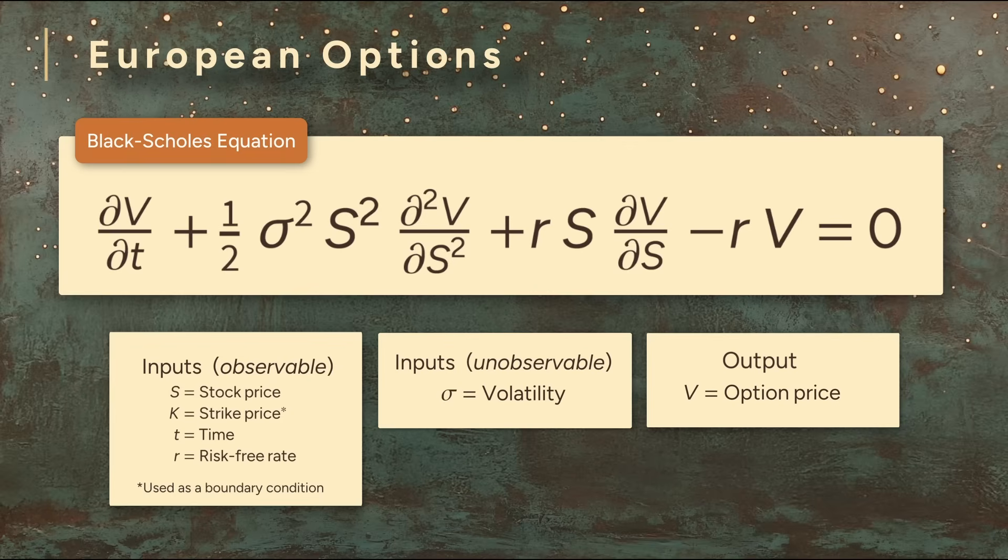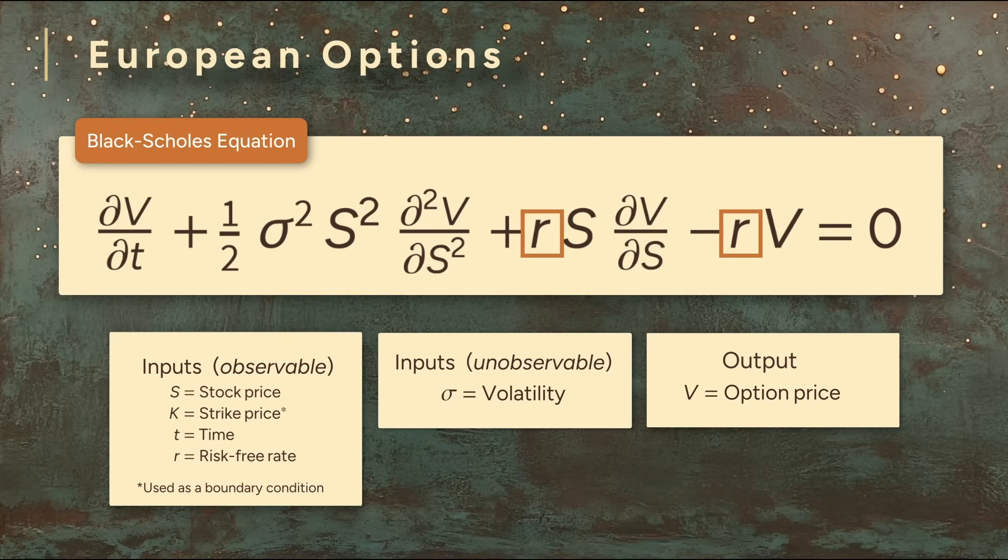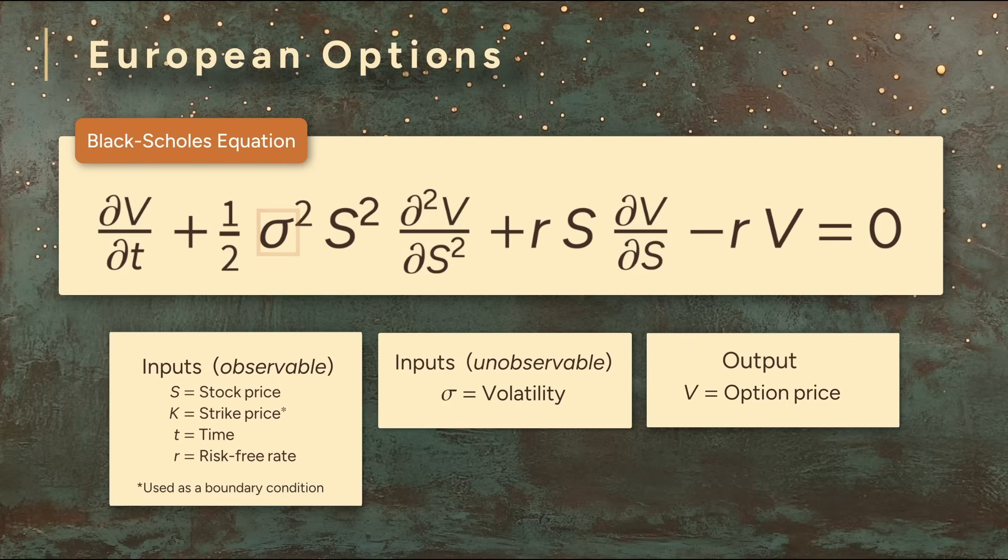It takes in all those observable inputs: the stock price, the strike, the time to expiration, and the risk-free rate. It also needs an estimate for volatility. Out comes a theoretical option price. But what if we reverse the process?